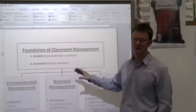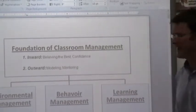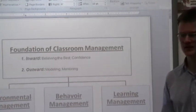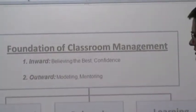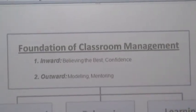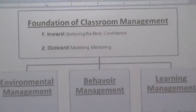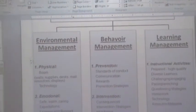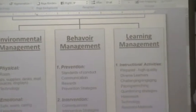The first section is called the foundation of classroom management and it has two parts: firstly inward, believing the best, and the second part is confidence. After that I've talked about an outward foundation of classroom management which is modeling and mentoring, and then I have three strands below that. The first strand is called environmental management, the second is behavior management, and the third is learning management.